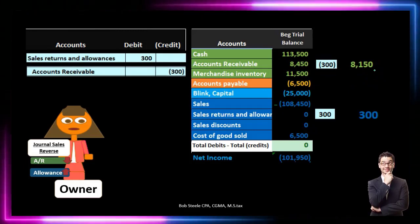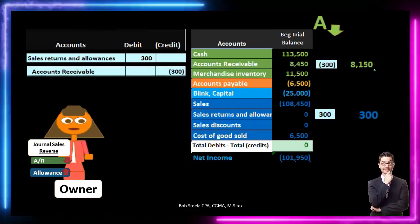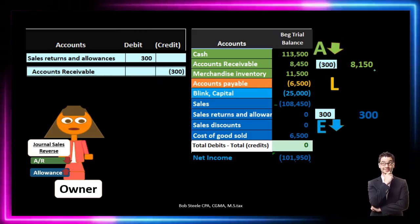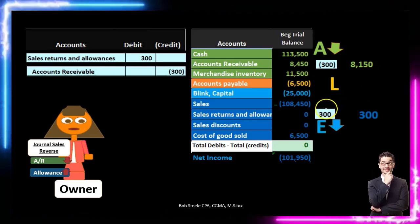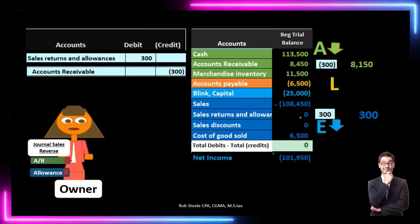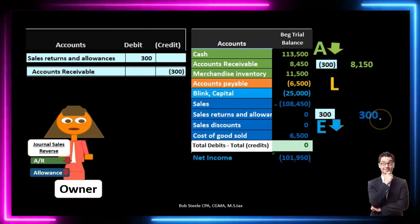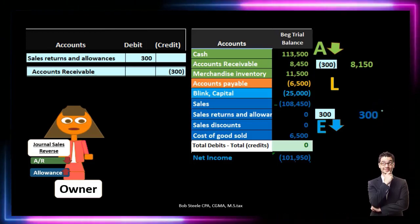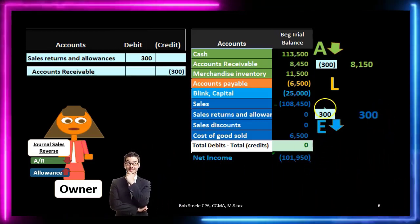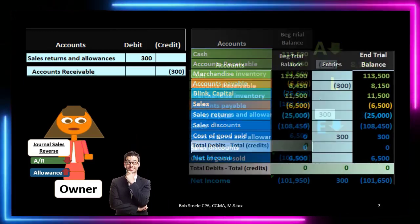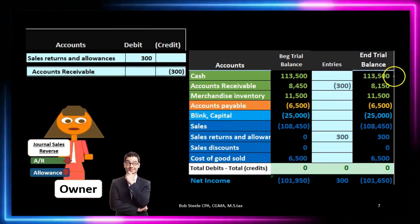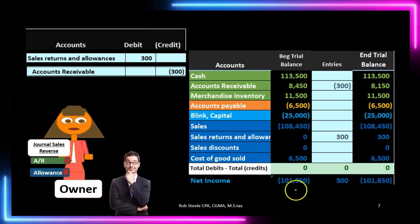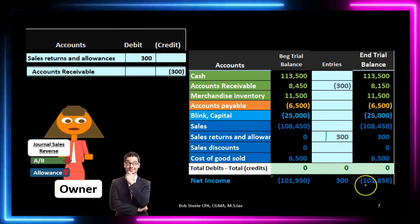Recording this journal entry, sales returns and allowances is debited — increasing it, acting like an expense similar to cost of goods sold, going up in the debit direction and bringing net income down while effectively reversing the sales item. The receivable has a debit balance, so we credit it making it go down to 8,150. The effect on the accounting equation: assets go down, liabilities remain the same, equity goes down because the contra account is increasing, decreasing net sales, which decreases net income and total equity. Net income is going down by the $300.